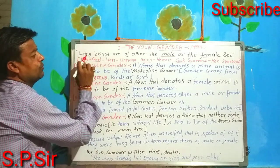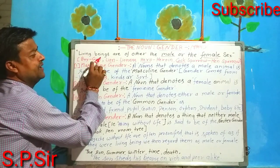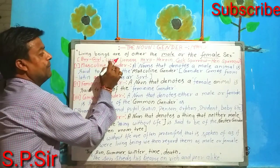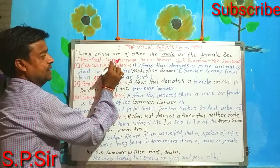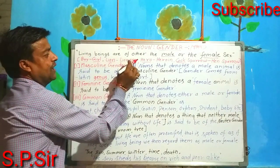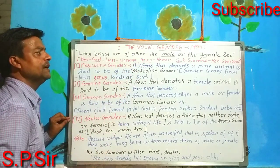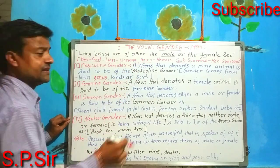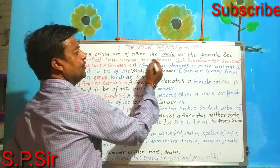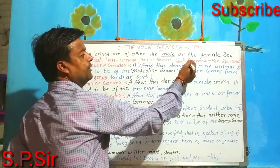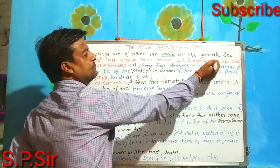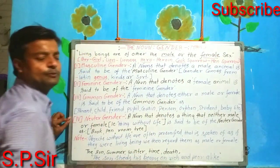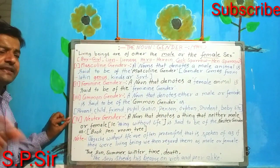Both examples are shown here: masculine gender — boy; feminine gender — girl. Masculine gender — lion; feminine gender — lioness. In the same way: hero/heroine, cock/hen, sparrow/hen sparrow.